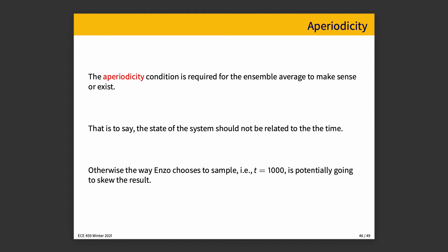The third condition is aperiodicity. That's required for the ensemble average to exist and make sense. It just means that the number of jobs in the system can't be dependent on the elapsed time. Otherwise, if Enzo chooses T equals 1,000 and at T equals 999 you always throw a bunch of jobs in the queue, that would mean it's not aperiodic because the system has a period — at 999 seconds it dumps more jobs in. So the value you read at T equals 1,000 will be affected by the fact that it is always being changed immediately before that.